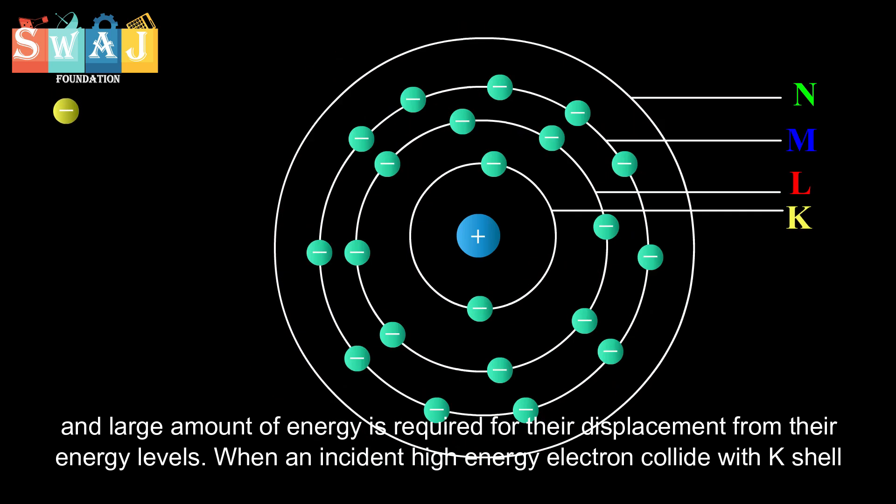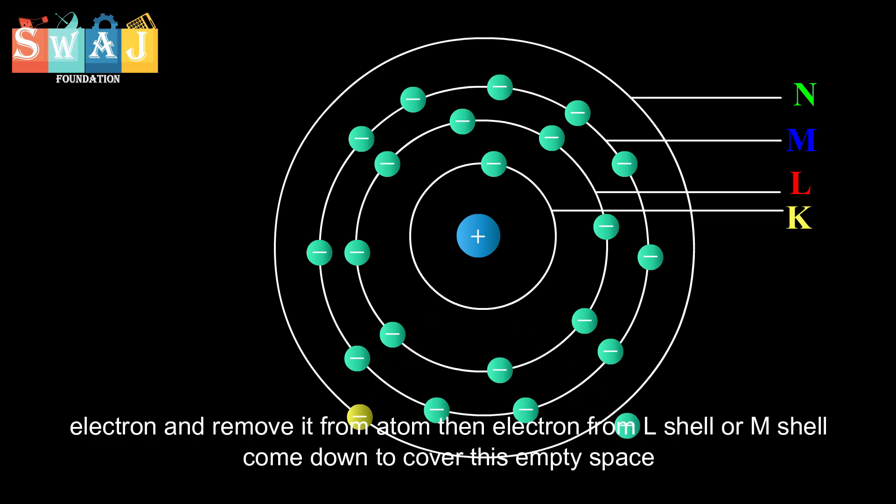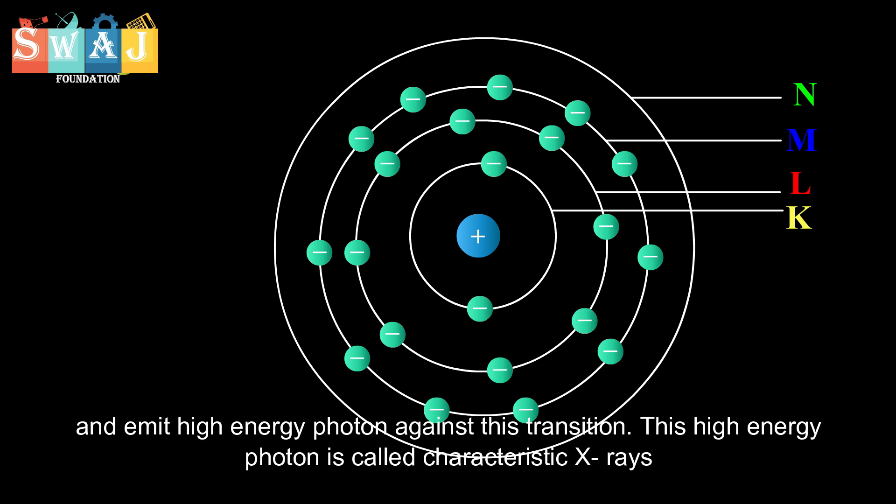When an incident high energy electron collides with a K shell electron and removes it from the atom, then an electron from the L shell or M shell comes down to cover this empty space and emits a high energy photon against this transition.